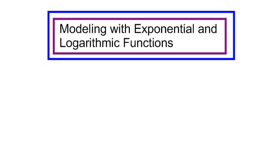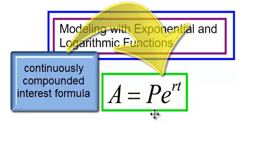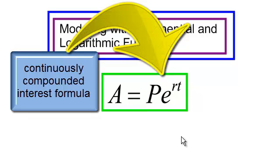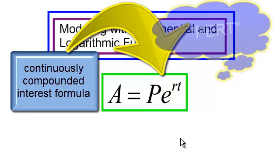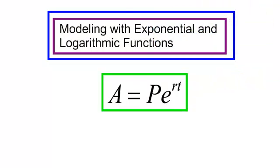But it seems like you all get pretty good with this formula, you know, we call it PERT. You see the PE to the RT. Now, this is continuously compounded interest, but for some reason, y'all remember PERT. But y'all get to exponential and logarithmic functions, and you get scared.